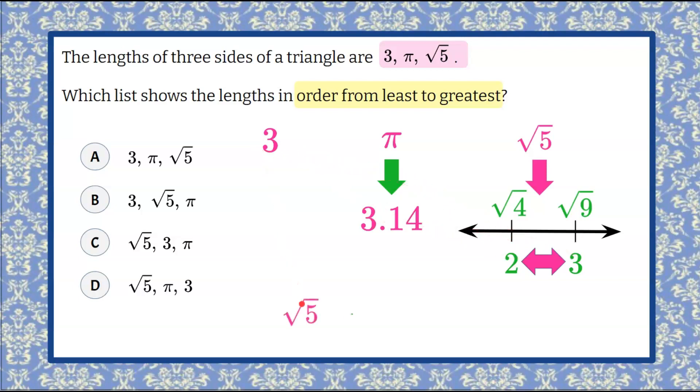So we're going to start with the square root of 5 and then we can see that 3 is less than 3.14 or 3 and 14 hundredths. So our next value is 3 and our largest value is going to be pi because that's approximately 3.14 which is greater than 3. So if we come over to our answer choices we can see that the correct choice is answer choice C.